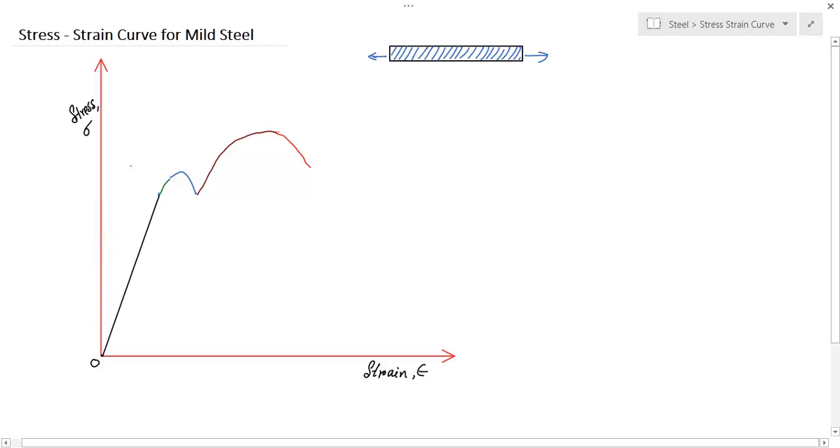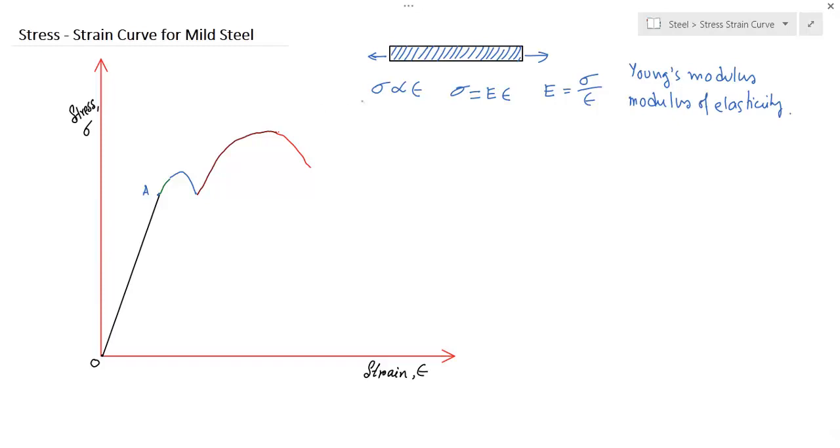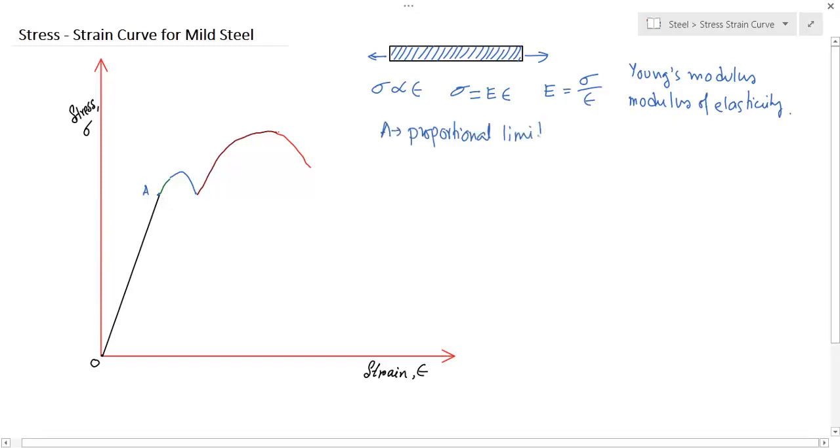You see up to a certain point, let's say this point is A, the curve is perfectly straight line. This means for this region OA, the stress is proportional to strain and you can write this like this. This constant of proportionality, that is stress by strain, is called Young's modulus or modulus of elasticity. So point A is some ultimate point up to which the curve remains straight. If you remove the load, the rod will recover its original position. That means the material is in elastic range. This point A is called proportional limit.